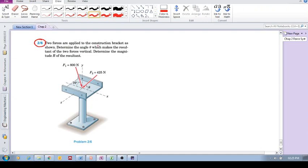It says two forces are applied to the construction bracket as shown, F1 and F2, at specific angles.